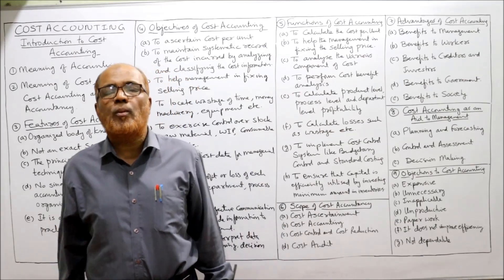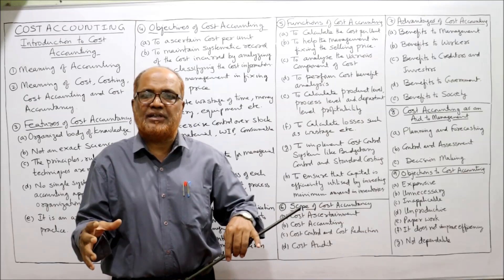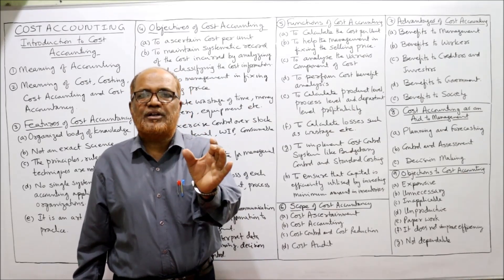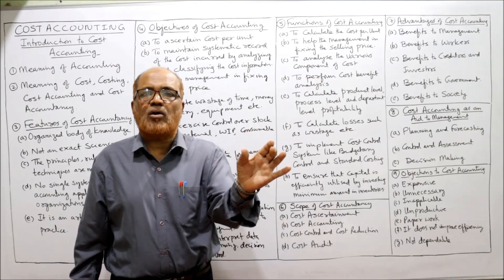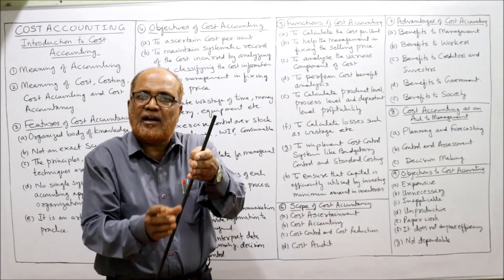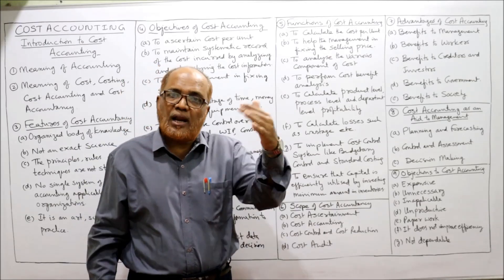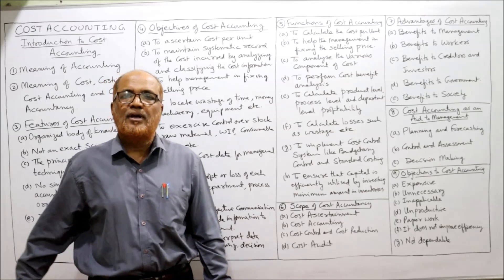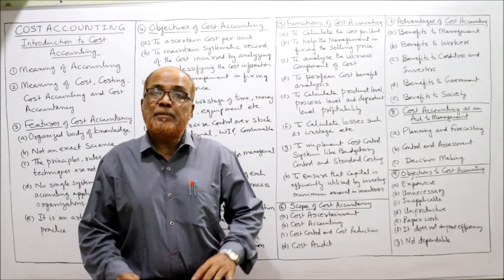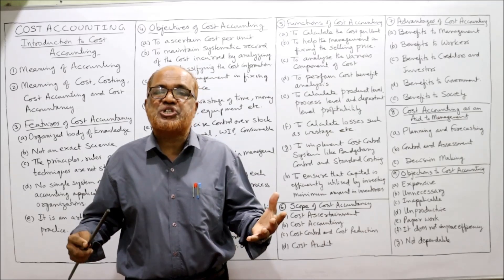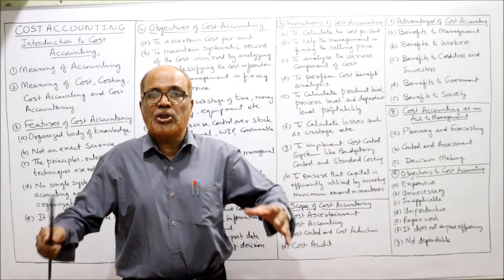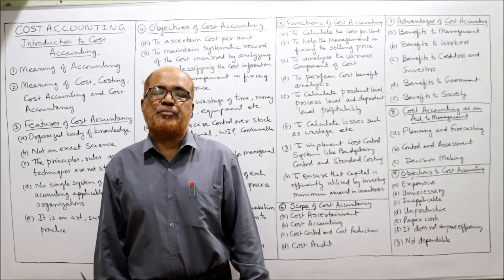The next topic is scope of cost accounting — meaning its domain or area of activity. Earlier, the scope was limited simply to ascertaining historical cost after incurring costs of material, labor, and overheads. But nowadays the scope has widened: not only cost ascertainment but also cost accounting — preparing different costing statements, analyzing and interpreting them, and helping management in decision-making.